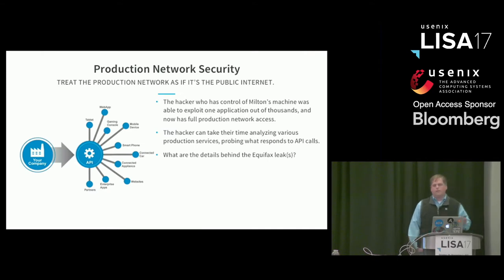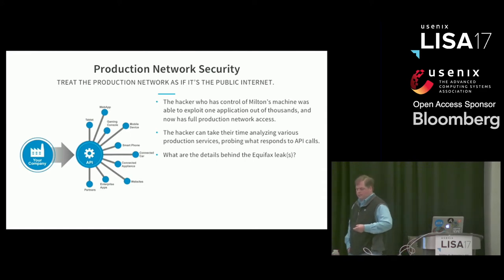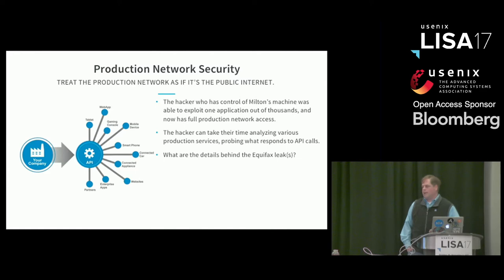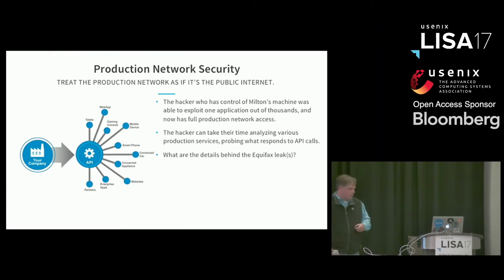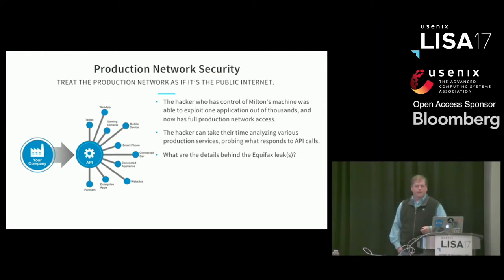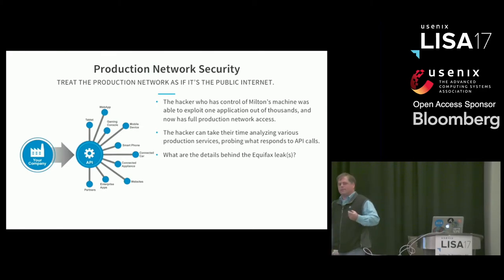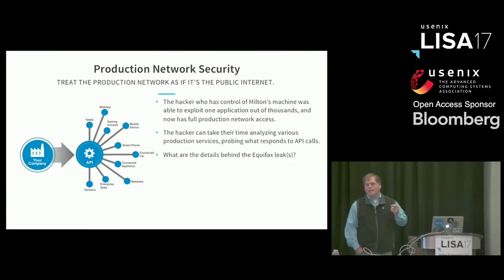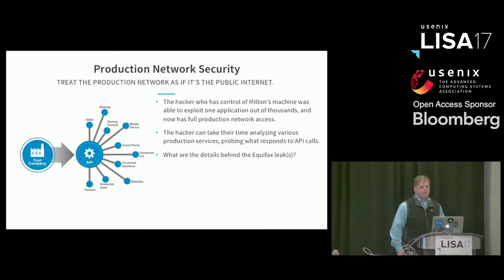The most recent example is the Equifax leak. A front-end application had a known vulnerability; someone cracked it and used that to pivot and siphon data off Equifax's network. Should that front-end application have been able to communicate directly to the back-end database? The idea is we need applications to be able to protect themselves. We need to say to a database server: you only have five or ten upstream consumers, there's no need to expose your network ports to the entire production network. This is like applications creating their own DMZ to the call graph.